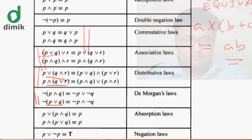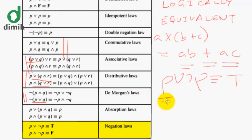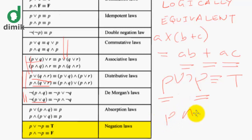We also have: P OR NOT P is always true (tautology), because if P is true, NOT P is false, making the OR true; if P is false, NOT P is true, still making the OR true. Conversely, P AND NOT P is always false (contradiction).